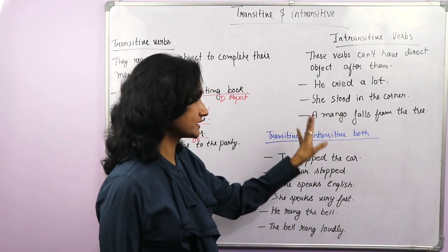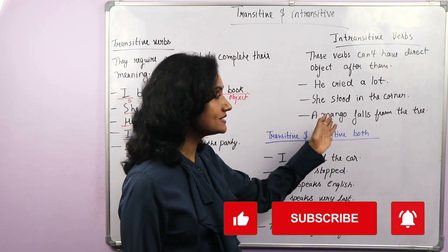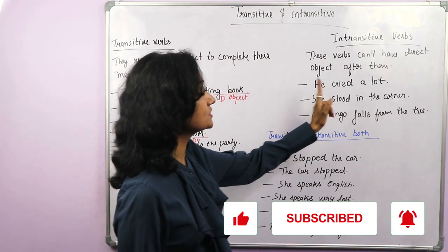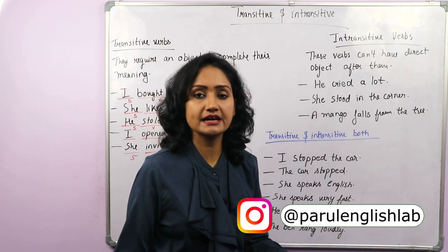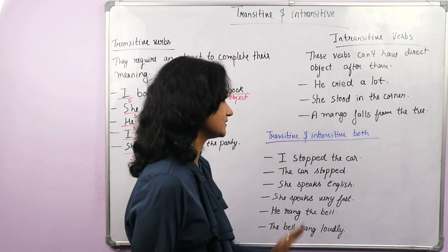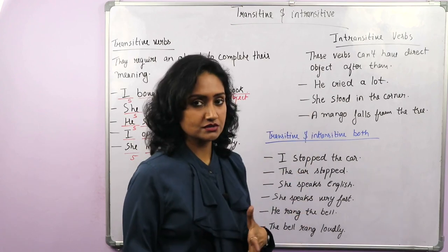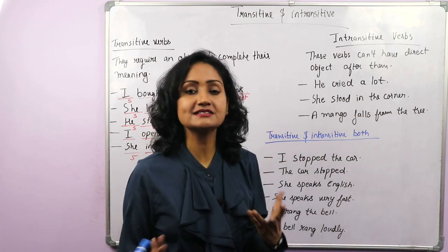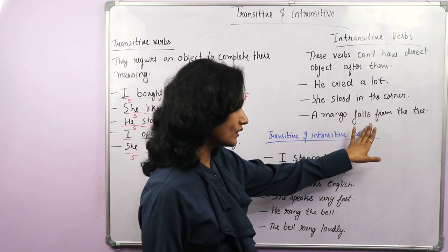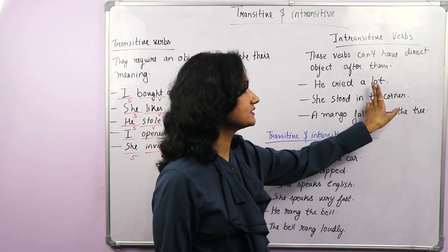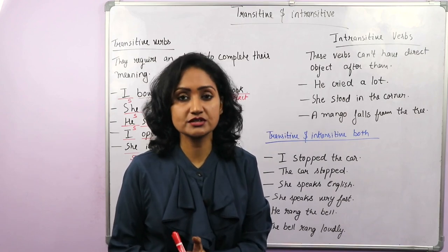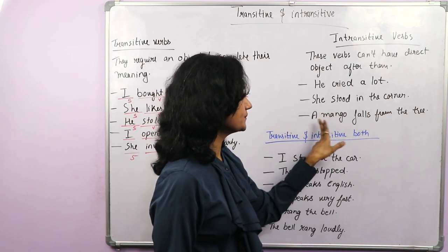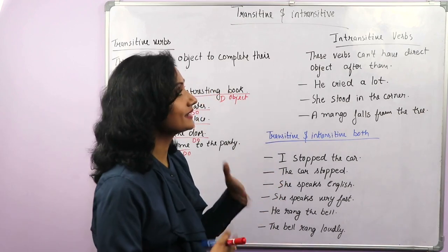Intransitive verbs can't have a direct object after them because they express an action that is complete in itself — they do not need a direct object to make sense. For example: 'He cried a lot' — that's a complete sentence, you don't need a direct object. 'She stood in the corner' — complete sentence. 'A mango falls from the tree' — can a mango fall something or someone? No. So these are called intransitive verbs.